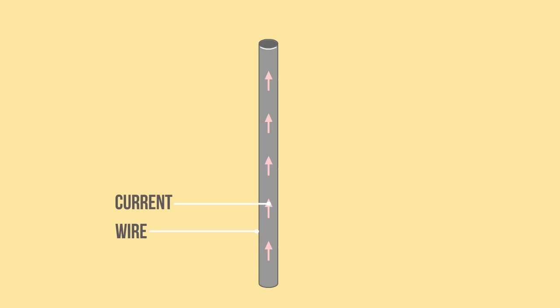We know when electricity or conventional current flows in a long straight wire, it creates a circular magnetic field around the wire.